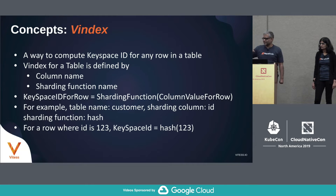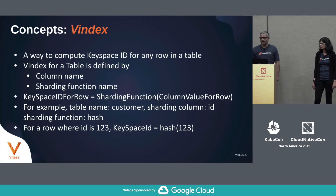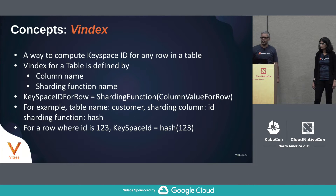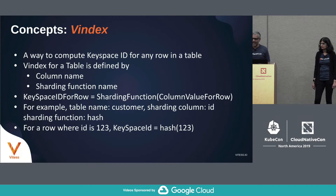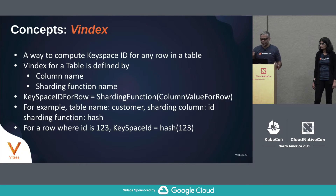For example, if there's a table called customer and you want to shard it using the ID column — a numeric column — with a hash sharding function, then for a row whose ID is 123, the keyspace ID would be hash of 123. Straightforward. Again, computed, not stored.